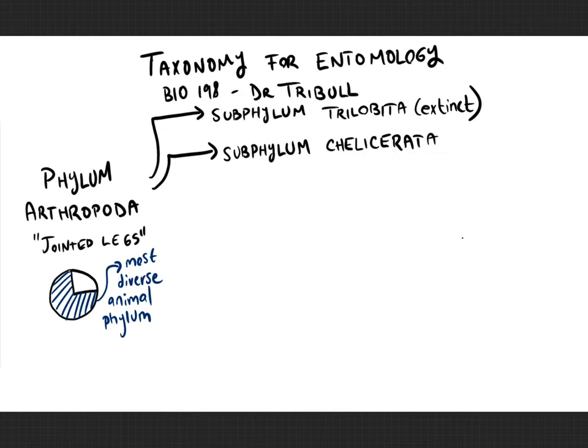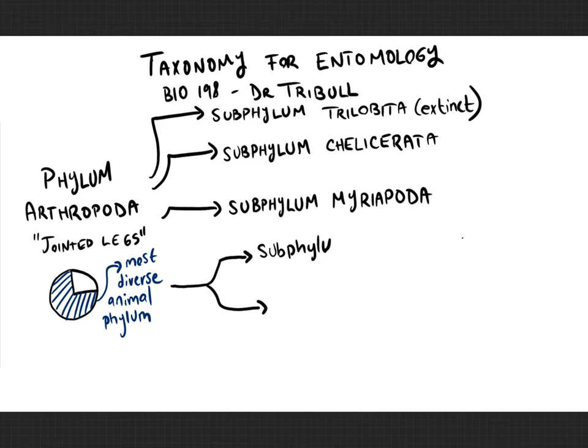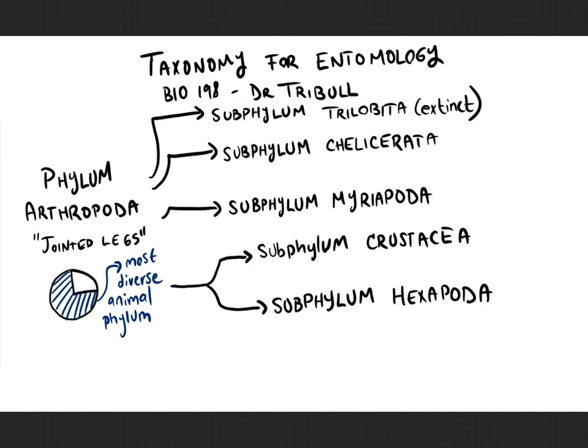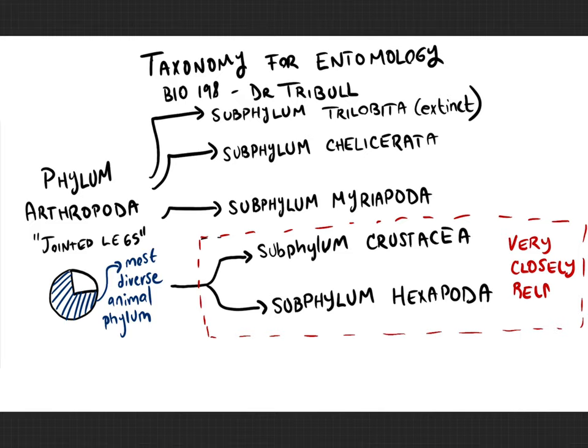Moving on, you have the subphylum Myriapoda — myriapoda means many-legged or million-legged — and that includes millipedes and centipedes. Then you have two subphyla that are very closely related: the subphylum Crustacea, which includes shrimps, crabs, and lobsters, and the subphylum Hexapoda. Crustacea are almost entirely aquatic except for roly-polys or isopods, while hexapods are entirely terrestrial. Recent evolutionary biology studies suggest these two subphyla are very closely related.